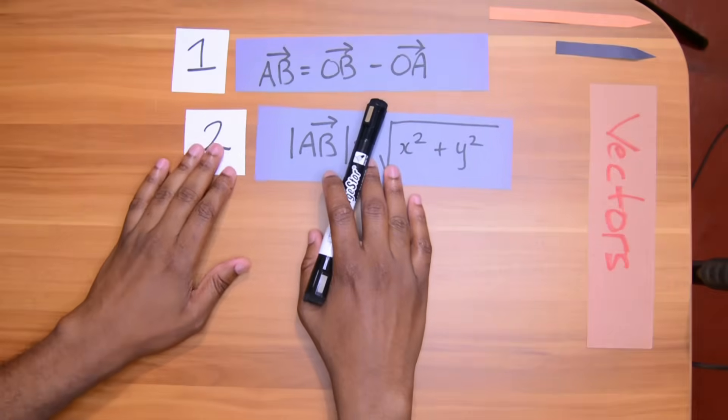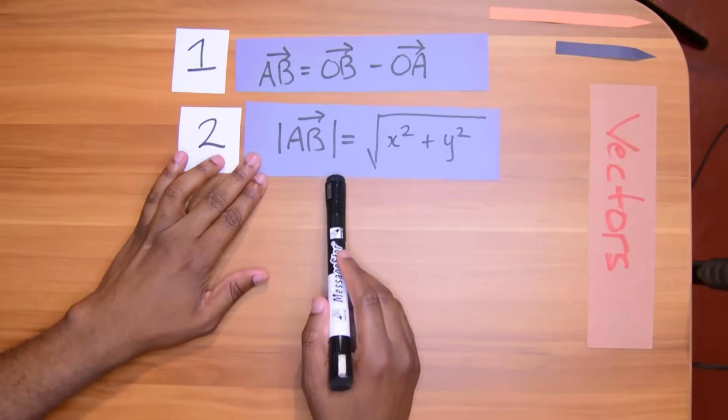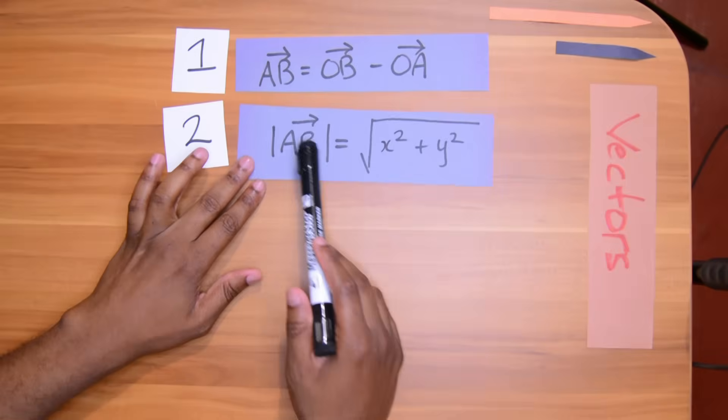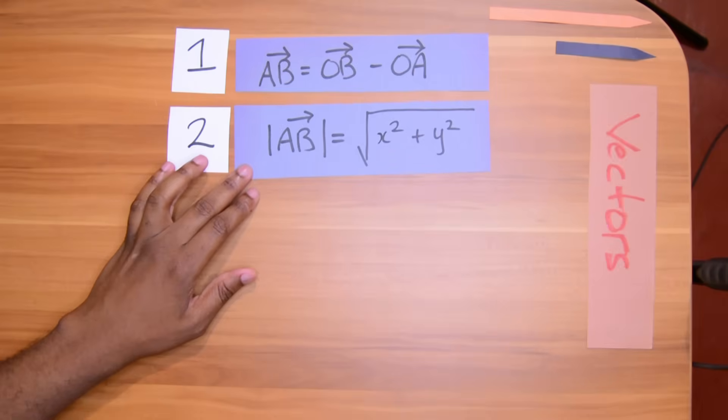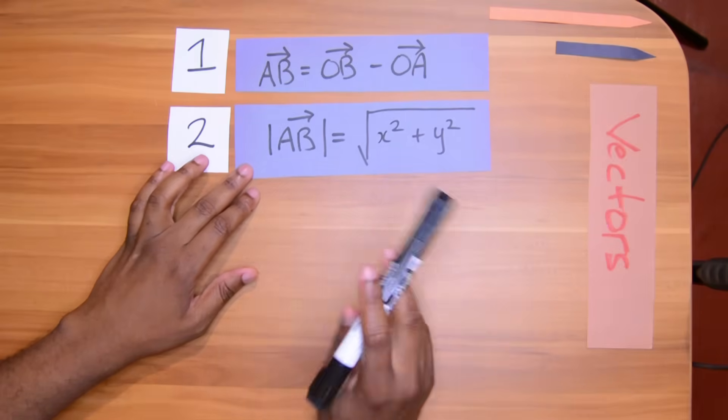Let's introduce the second formula. These signs may look familiar to you. They are called the modular sign. And we can use them in matrices to talk about determinant. But when we use them in vectors, we are talking about magnitude. All right, so let me give you a little quick illustration of how this can be used.